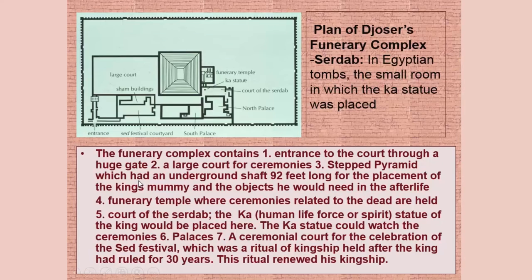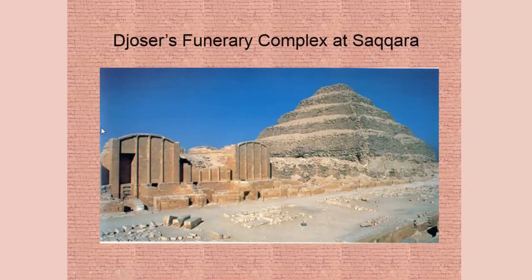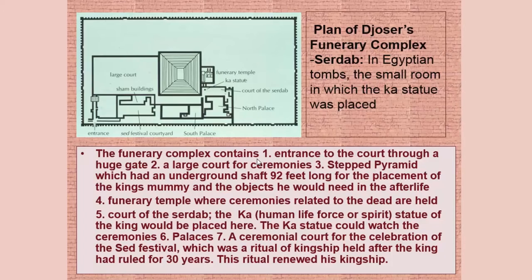This is a plan of the funerary complex. We read these plans as though we're in a weather balloon on top, having chopped the top off — solid lines are solid walls and openings are doorways. Over to the left are sham buildings, not real buildings at all, but spirits can use them. There's a festival courtyard, north and south palaces, a court for the Serdab — which is where the Ka statue is — and then down here is the Ka statue itself.